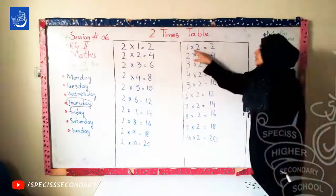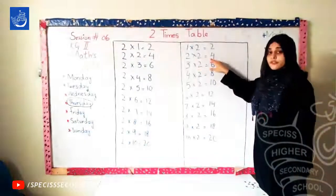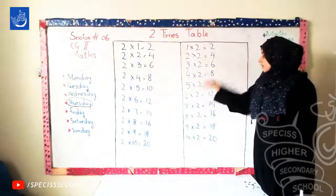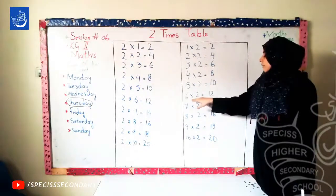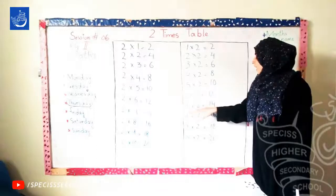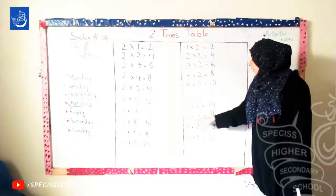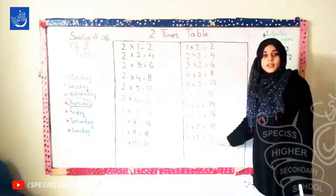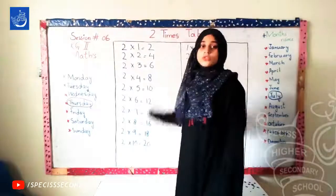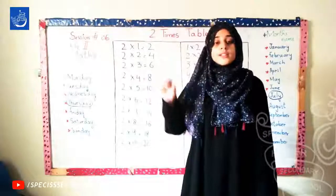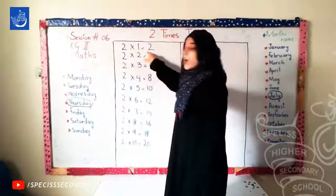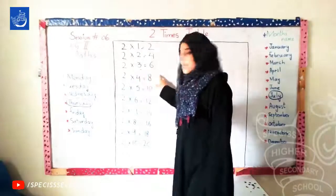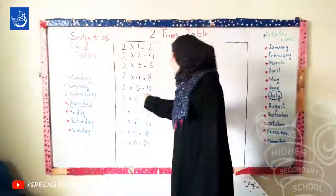1 times 2 is 2. 2 times 2 is 4. 3 times 2 is 6. 4 times 2 is 8. 5 times 2 is 10. 6 times 2 is 12. 7 times 2 is 14. 8 times 2 is 16. 9 times 2 is 18. 10 times 2 is 20.